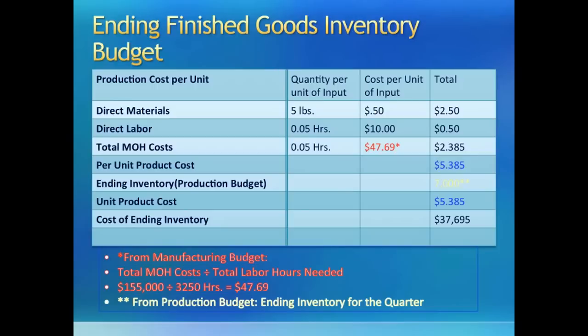We begin with obtaining the direct material cost per unit from the materials budget. Remember, we spent £5 on each unit and each pound cost $0.50, so per unit direct material cost is $2.50.